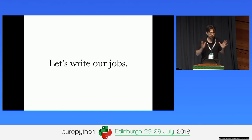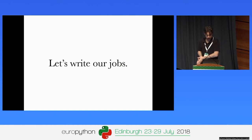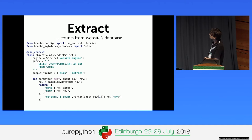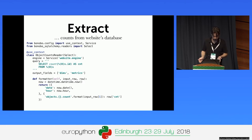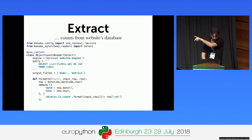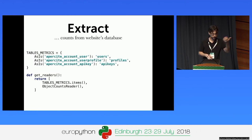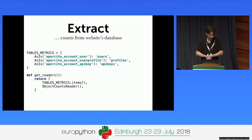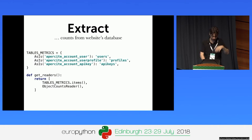Let's write our jobs. An extractor looks like this — it's an ObjectCountReader which builds a SQL query that counts objects in a table. It returns a tuple of a dimensions dictionary and a metrics dictionary. The query is parameterized, so we use a dictionary mapping table names to metric names and create an iterator using dict.items() that passes data first-in-first-out to ObjectCountReader, which then sends the request to the database.